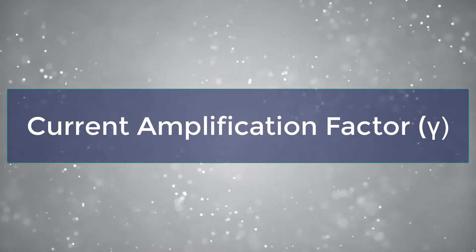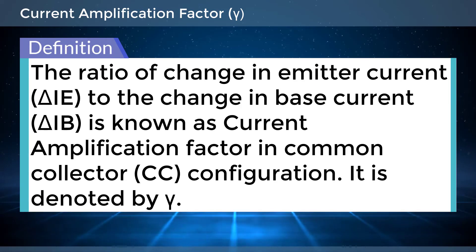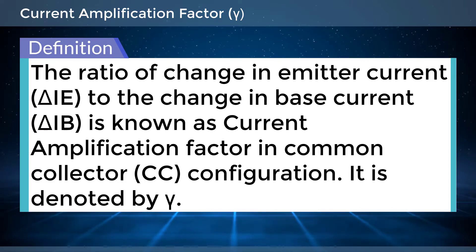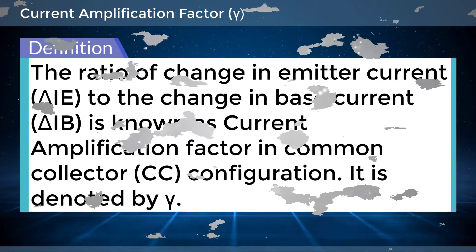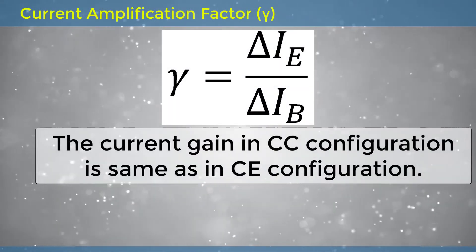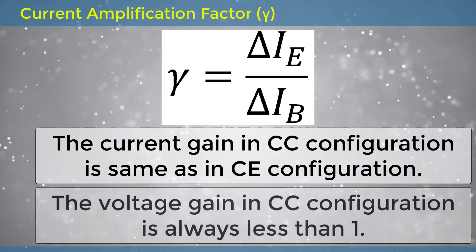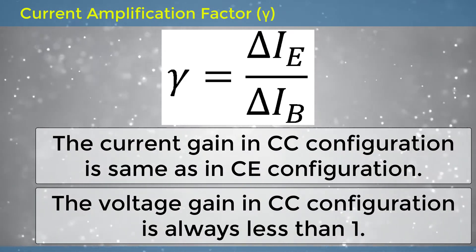Current Amplification Factor: The ratio of change in emitter current delta IE to the change in base current delta IB is known as the Current Amplification Factor in Common Collector (CC) Configuration. It is denoted by gamma. Gamma equals delta IE divided by delta IB. The current gain in CC configuration is the same as in CE configuration, and the voltage gain in CC configuration is always less than 1.